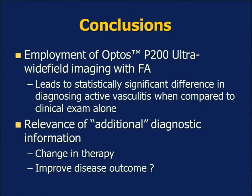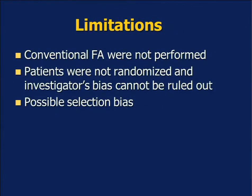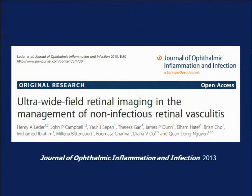That was the first study that we did, and we published it. We recognized that the employment of the wide-angle system seemed to lead to a statistically significant difference in diagnosing active vasculitis when compared to clinical examination alone. However, the relevance of the additional diagnostic information is still in question — whether it leads to change in therapy, and more importantly, whether a change in therapy makes any difference in disease outcome, which we plan to address in the future. We do recognize limitations: conventional fluorescein angiography was not performed on the same day for ethical reasons, patients were not randomized, investigator bias cannot be ruled out, and there may be selection bias. This study was published last year on the use of ultra-wide field retinal imaging in the management of non-infectious retinal vasculitis.